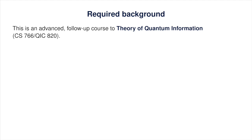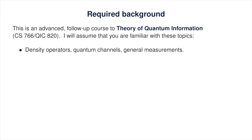This course is intended to be a follow-up course to another graduate course that I teach, called Theory of Quantum Information, which is numbered CS766 or alternatively QIC820. I will assume that you have familiarity with the contents of that course, which includes the following topics. First is the general formulation of quantum information, as described by density operators, quantum channels, and general measurements. In a mathematical sense, these are the building blocks of quantum information, and it is essential for this course that you have a good understanding of this formalism.